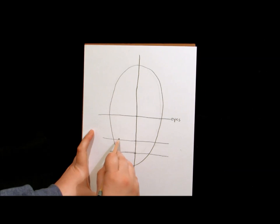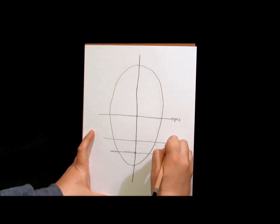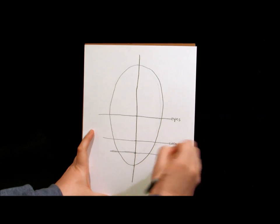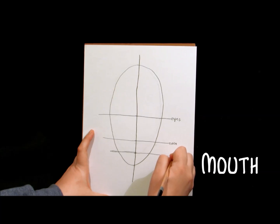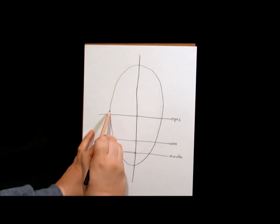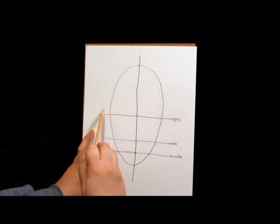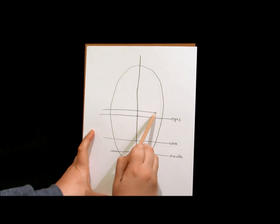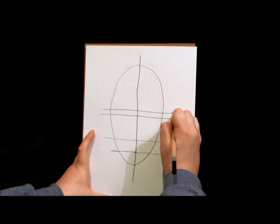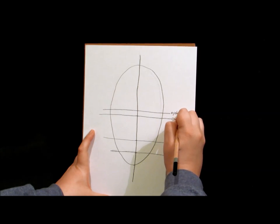This line is where the bottom of the nose will be. This line here is right towards the bottom of the mouth. Let's draw another line above the eye line. You just want to come up a little bit and draw another line right parallel above that. Now that line will be your eyebrow line.